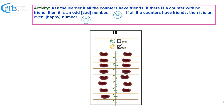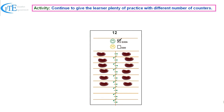Then, depending on whether the number is odd or even, they need to tick the appropriate box on top. Continue to give plenty of practice with different numbers of counters until the learner has understood the concept of even and odd numbers.